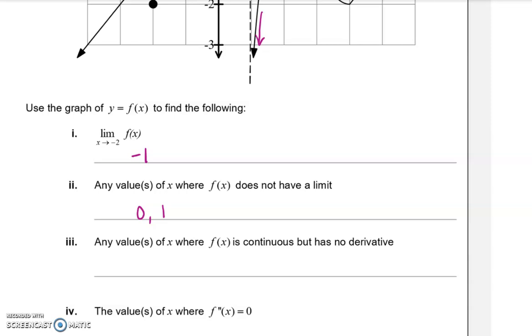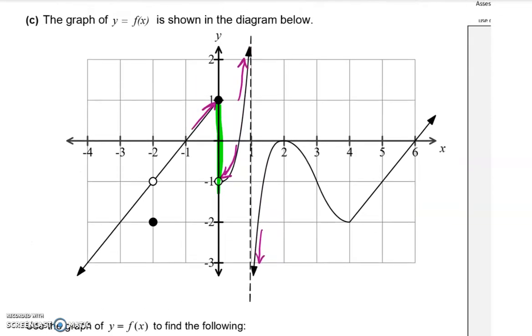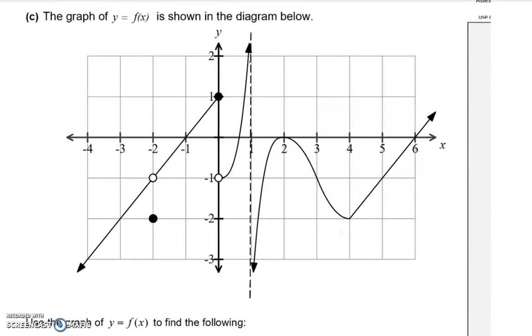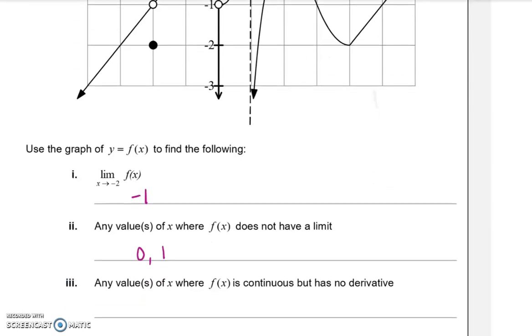Part 3, any values of X where f(x) is continuous, but it has no derivative. So that means that the graph carries on. There's no breaks in it, but we couldn't differentiate it there. So let's take a look. So anywhere that's continuous but not differentiable means we're looking for places where there's sharp corners. And that is happening right here. So that's when X equals 4.